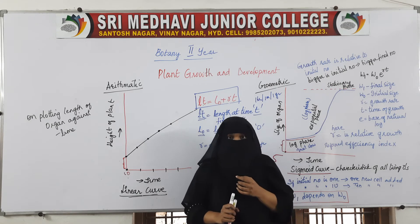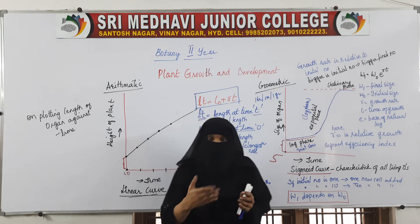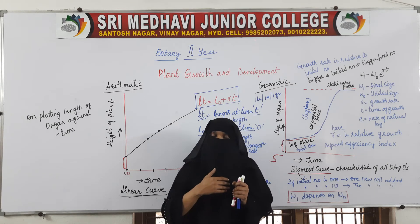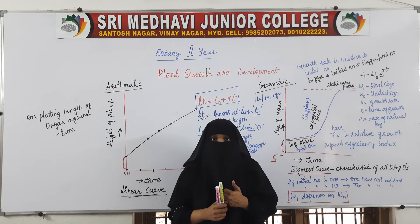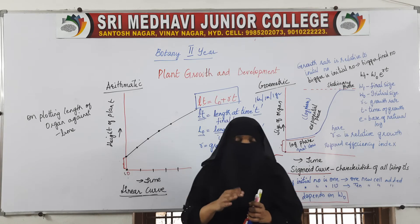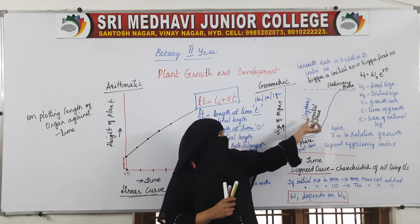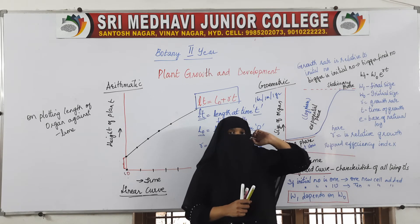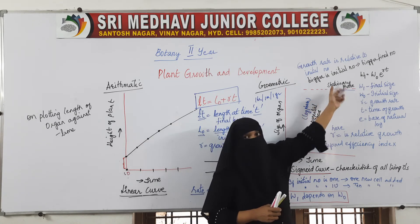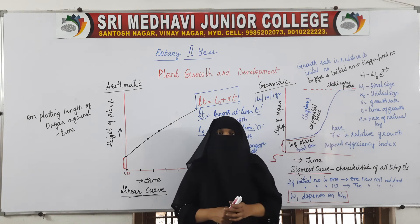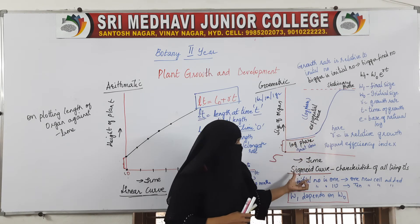Why does growth stop? Nourishment plays an important role. When proper nourishment was there, cells were continuously and rapidly dividing. But when they divided continuously, the available nutrition was used up by the cells and plants. Once nutrition is finished, the growth process stops and it enters the stationary phase. The cells then change into permanent tissues.